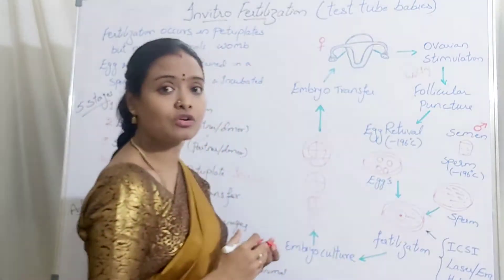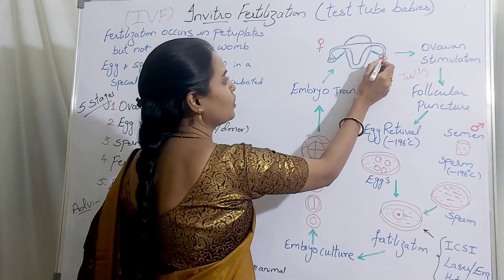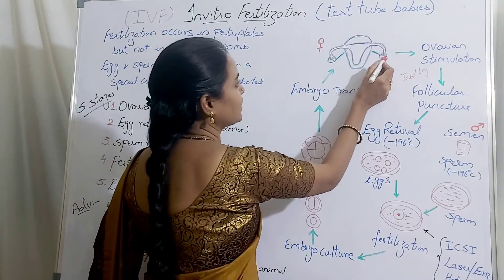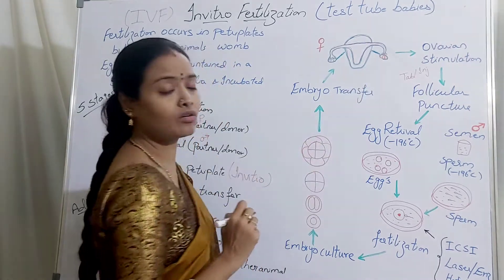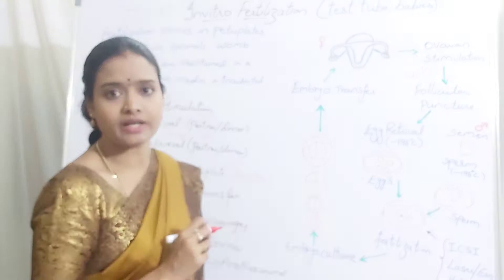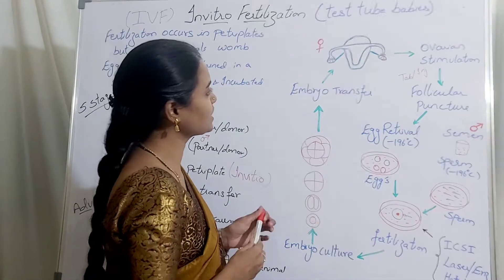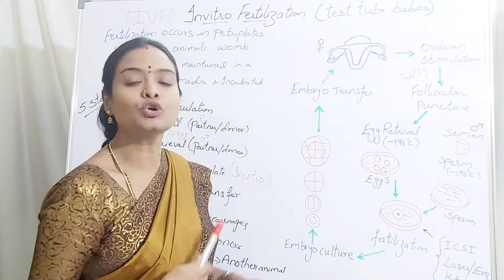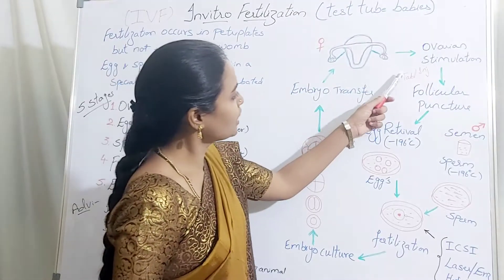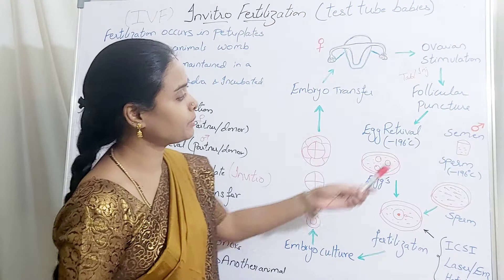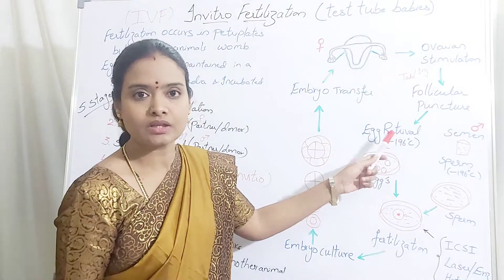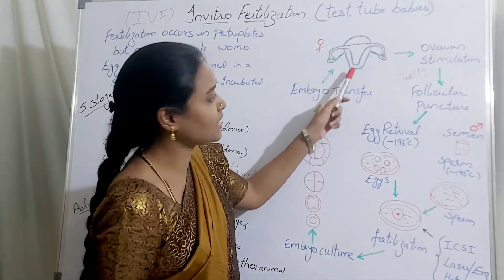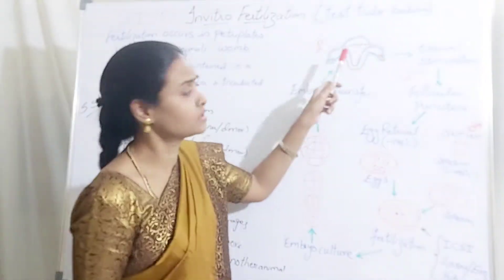Due to ovarian stimulation or super ovulation injections the female has produced more number of oocytes. Inside the ovary these are the eggs or ovum — also called oocytes — that are produced. After that there will be follicular puncture and egg retrieval. Using scanning and a retrieval needle, the oocytes are extracted from the female reproductive system.